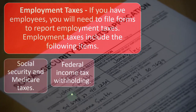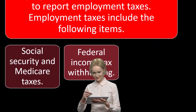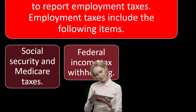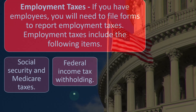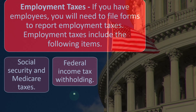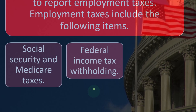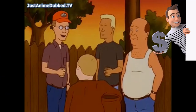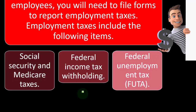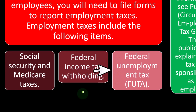Employment taxes include Social Security and Medicare taxes, and federal income tax withholdings. When you have employees, you deal with your portion and their portion of Social Security and Medicare payroll taxes. Don't confuse this with your own federal income tax on Form 1040 — this is the employees' federal income tax that you are withholding from them. There's also the federal unemployment tax, the FUTA tax, which is an employer-only tax.